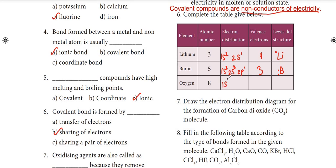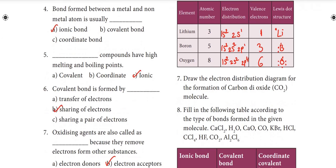Next, oxygen, atomic number 8. Electron configuration: 1s2, 2s2, 2p4. Valence electrons: 6 total. Lewis dot structure for oxygen: O with 6 dots — 1, 2, 3, 4, 5, 6.